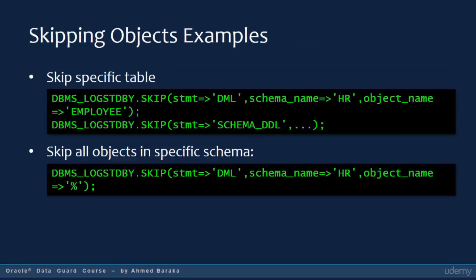The best way to understand how to use the DBMS_LOGSTDBY.SKIP procedure is by looking at examples. The first example sets up a rule to skip any DML or DDL statement executed against the EMPLOYEES table owned by the HR schema — you need to run the skip procedure twice, once for DML and once for DDL. The second example sets up a rule to skip all DML statements executed on any object owned by the HR schema.